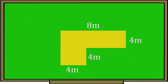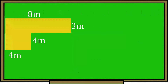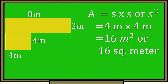Let's try another example. Find the area of this figure with the following dimensions: 8 meters, 4 meters, 4 meters, and 4 meters. The first thing we do is divide the figure into squares and rectangles, then find the area of each figure. The area of a square equals side times side or S squared. The measurement of the side is 4 meters times 4 meters, so the answer is 16 square meters.